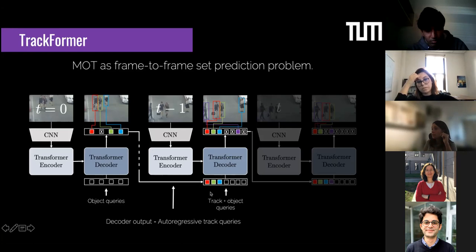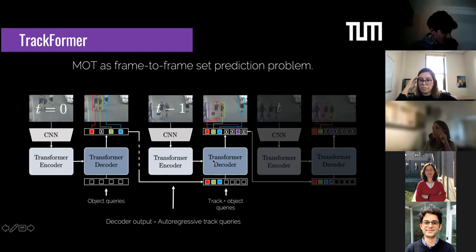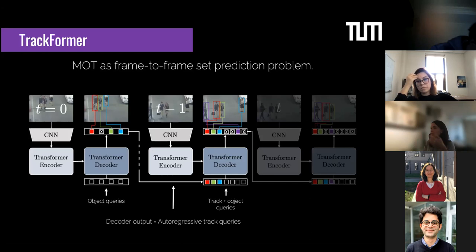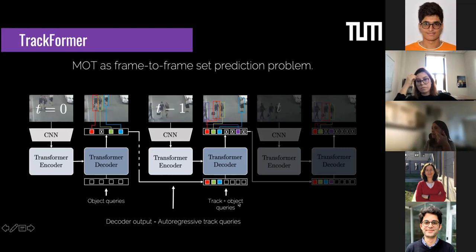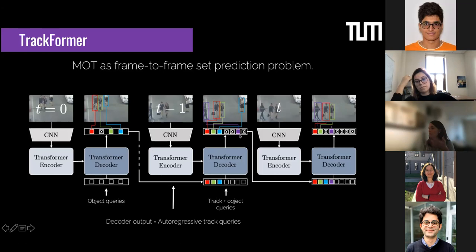Track queries are color-coded because they already contain an identity — I know exactly which ID each track query is following: red, green, or blue. Whenever a track query goes through the transformer decoder and predicts a new box in the new location, I directly assign the same ID as the previous frame. I still have object queries for new pedestrians appearing in the scene, which will become track queries for the next frame. If a pedestrian disappears, the blue track query predicts nothing in the next frame, meaning that person has left the scene.